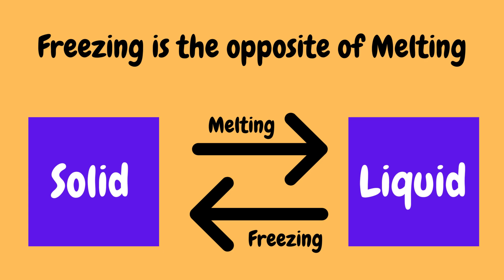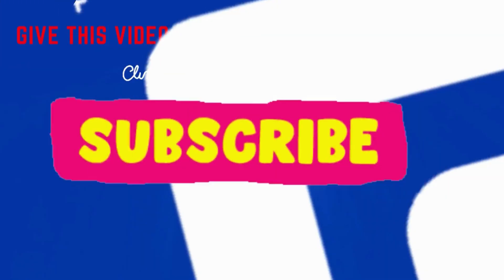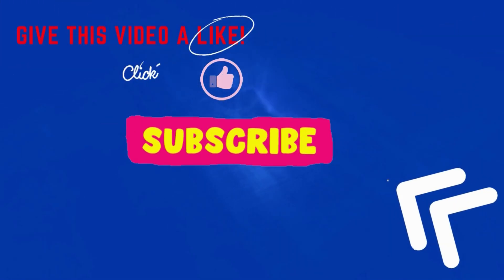Freezing is the opposite of the process of melting. In melting, solids change to liquids, and in freezing, liquids change to solids. So freezing and melting are opposite processes. Hope you enjoyed learning this topic — please like the video and subscribe to the channel.